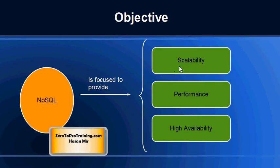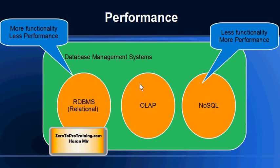NoSQL databases are scalable — they can handle large amounts of data. As the data keeps on growing, scalability is there, performance is there, and high availability is there as well, in terms of hardware failures. However, the ability to handle large amounts of data with amazing performance comes at a compromise: they offer less functionality compared to relational databases.